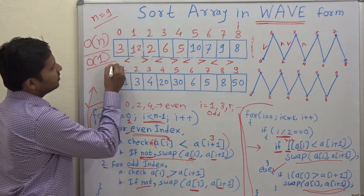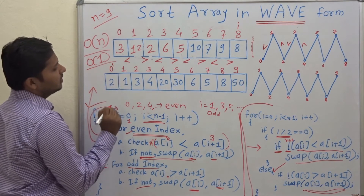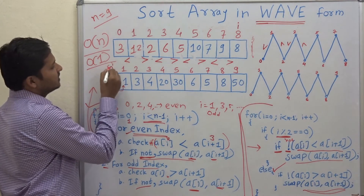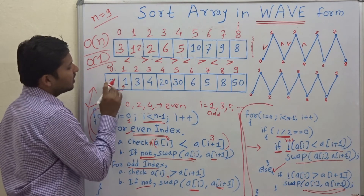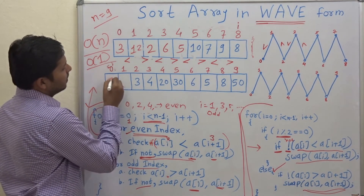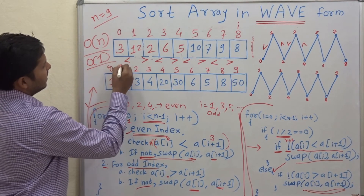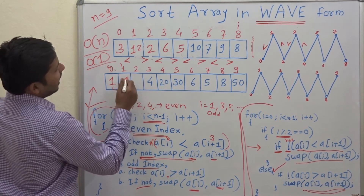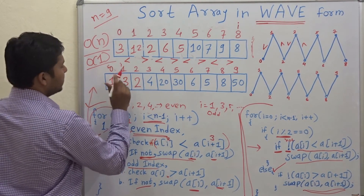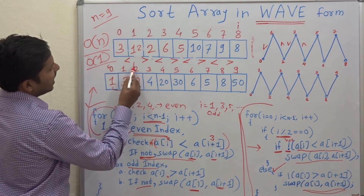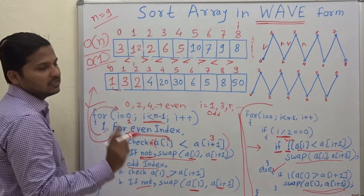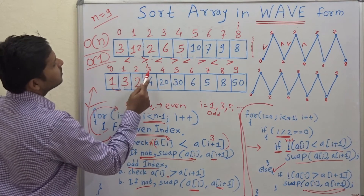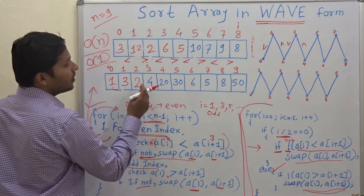Let's execute the code on the second example. First i=0 (even index): check whether a[0]=2 is less than a[1]=1. It is not, so swap — 1 comes to index 0, 2 goes to index 1. Increment i to 1 (odd): check whether 2 is greater than 3. It is not, so swap. Increment to i=2 (even): check whether 2 is less than 4 — yes, no action. Increment to i=3 (odd): check whether 4 is greater than 20 — no, so swap.